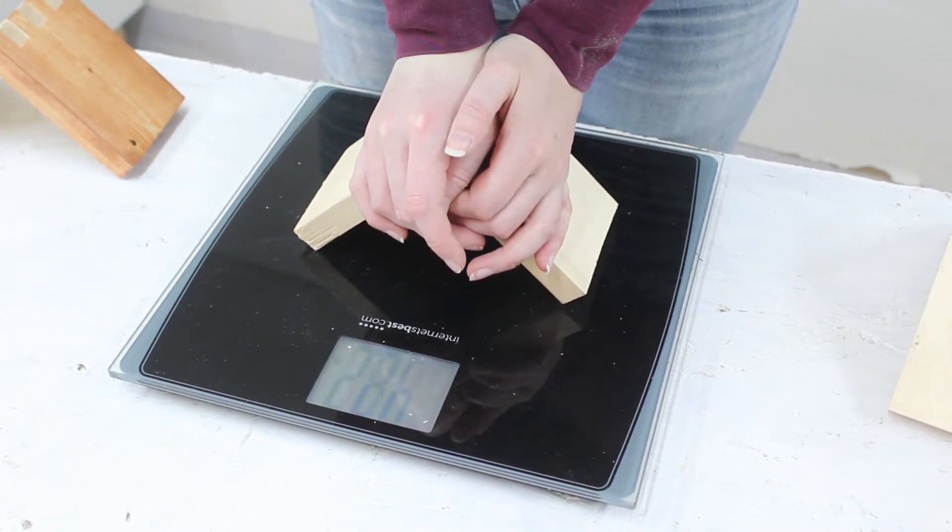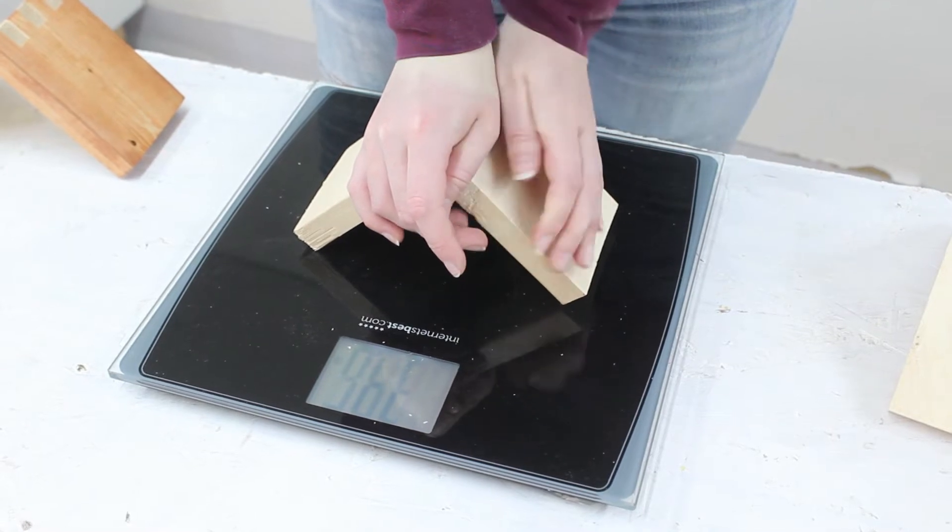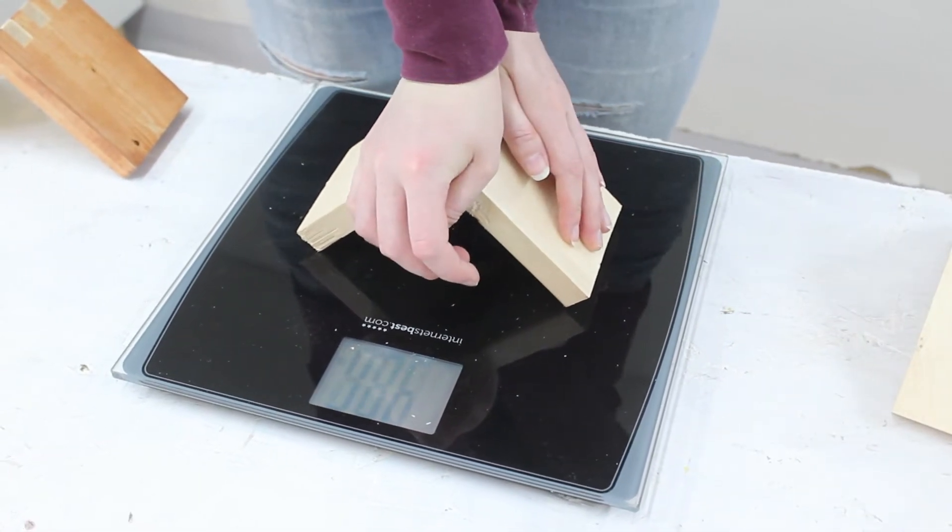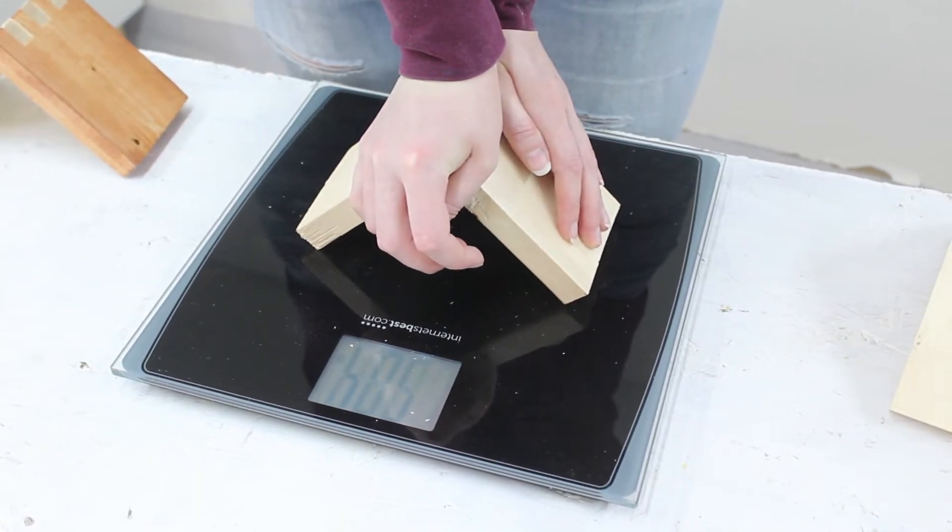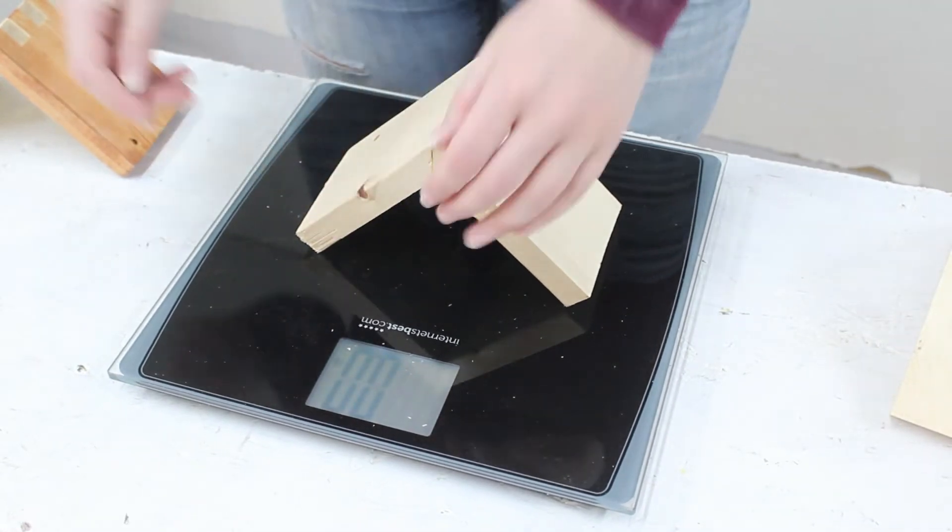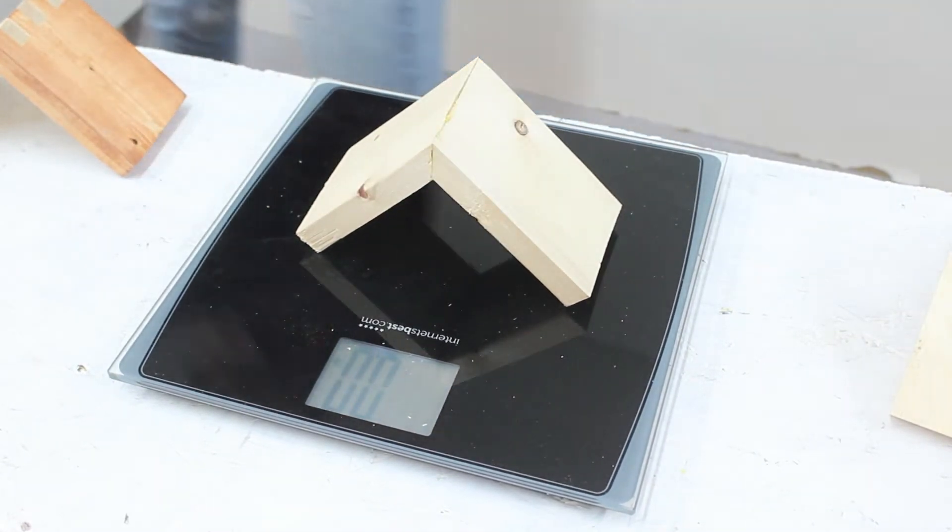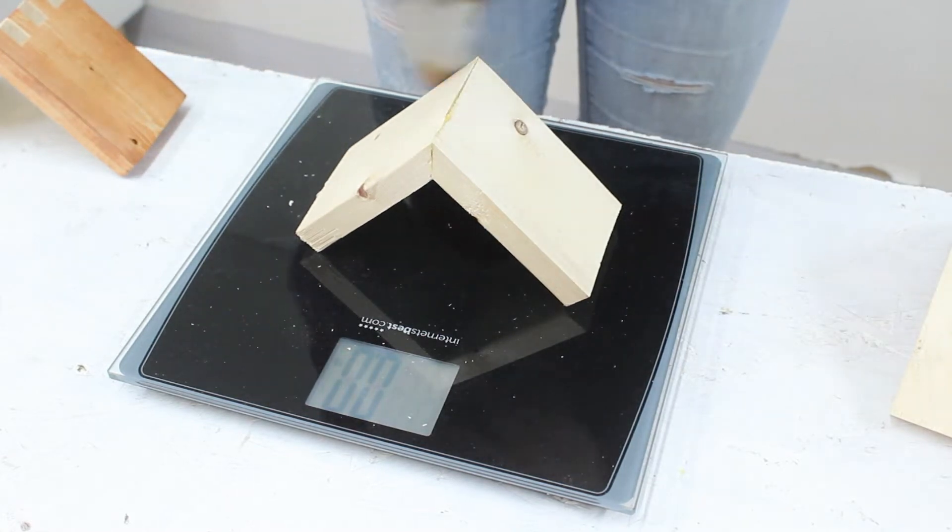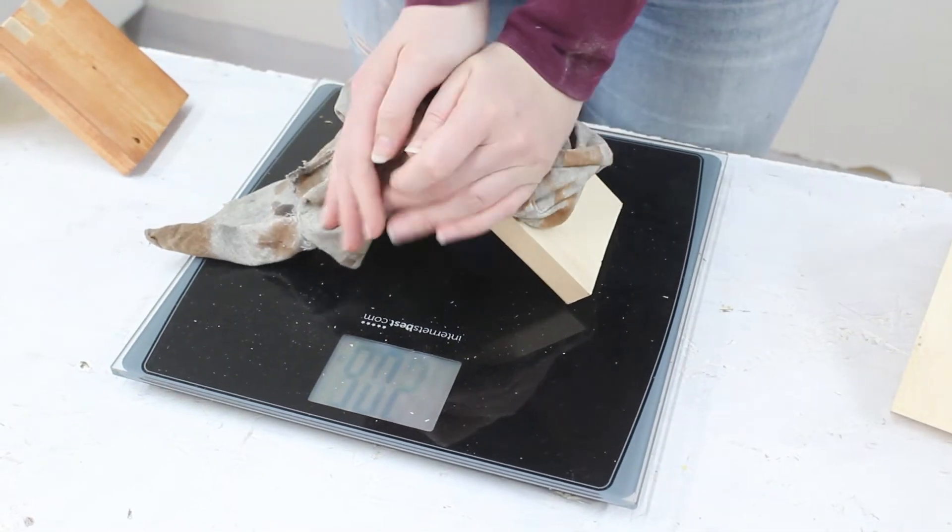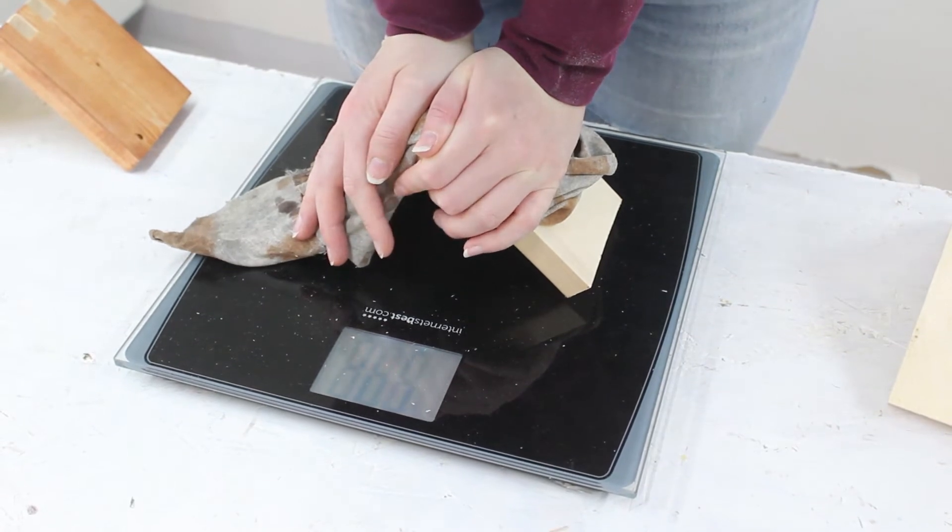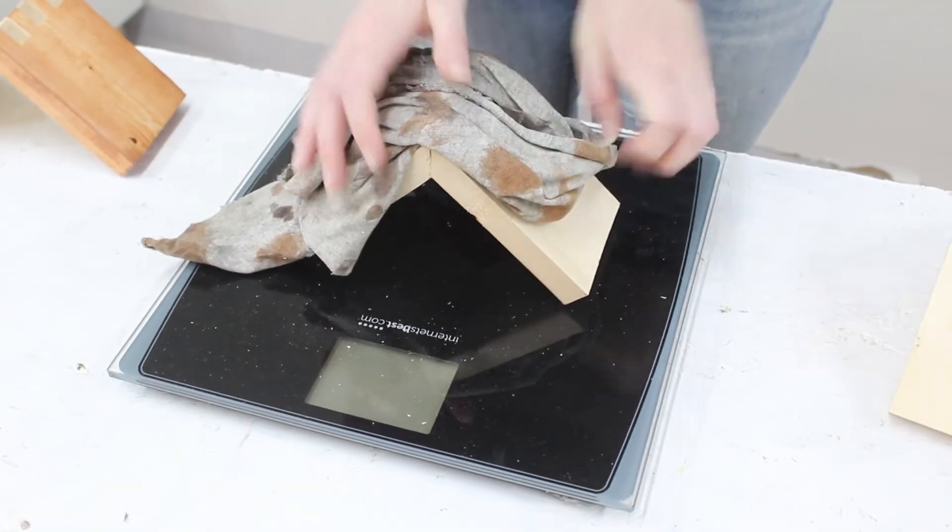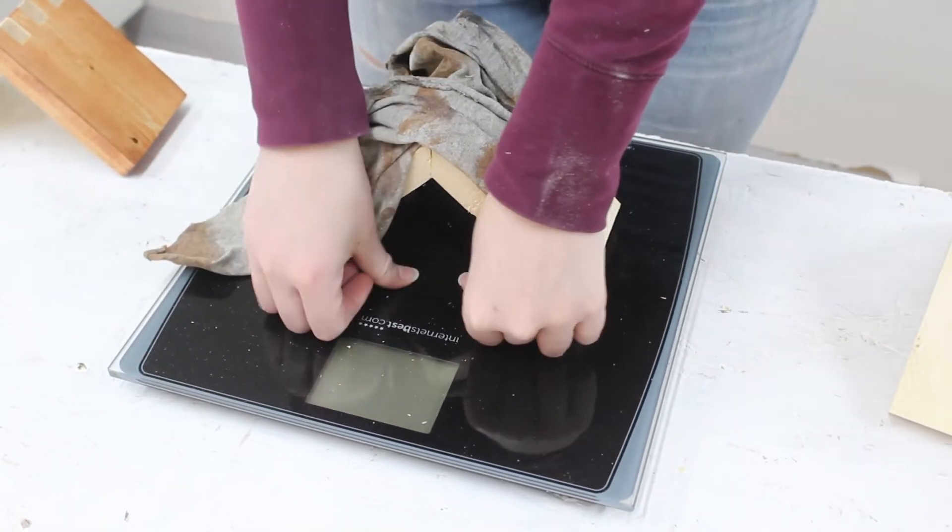We are at 30 pounds, 40 pounds, 50, 60, 70. This is hard. This hurts. I'm going to put a rag down so that my hands don't hurt quite so much when I do this. And the scale turned off and I don't know why.